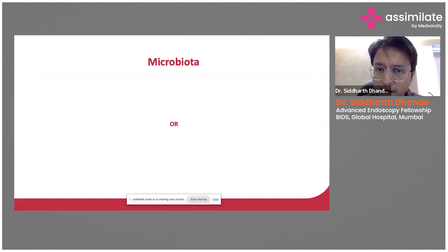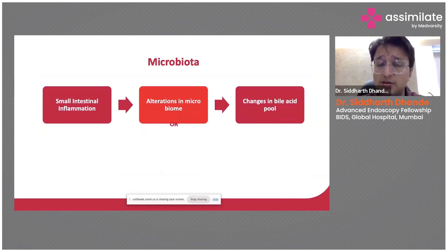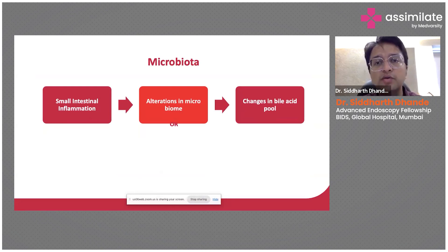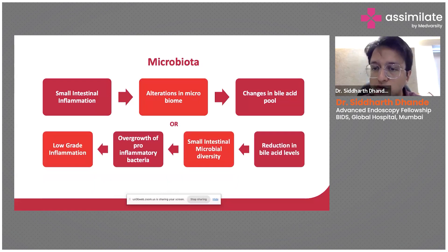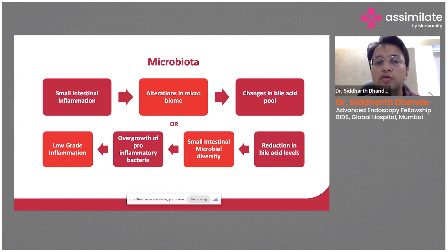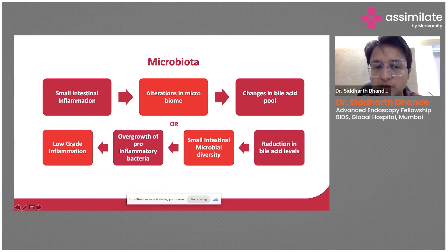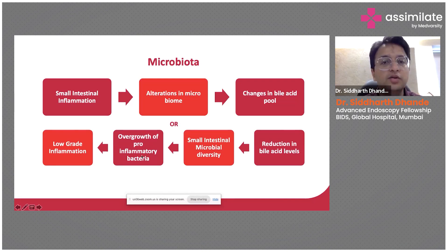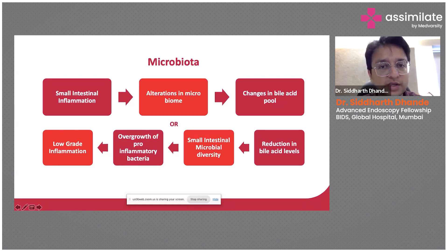If you look at the role of gut microbiota, there is some evidence that small bowel inflammation can alter the gut microbiota and eventually cause a change in the bile acid pool. Vice versa, a reduction in bile acid levels can alter small intestinal microbial diversity, leading to overgrowth of pro-inflammatory bacteria causing inflammation. Either way, all the good bacteria are demolished in the small intestine and there is overgrowth — a condition termed small intestinal bacterial overgrowth (SIBO).